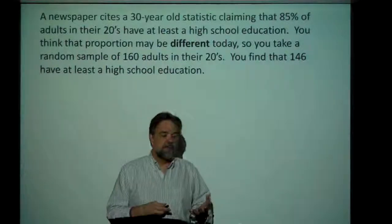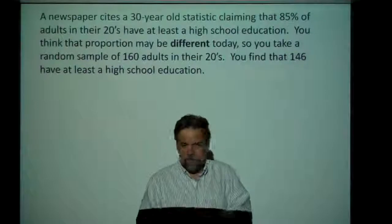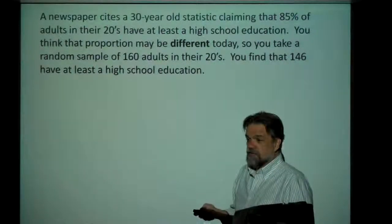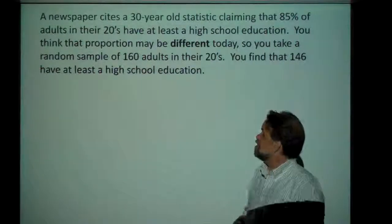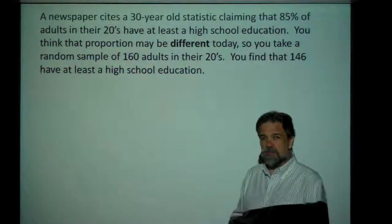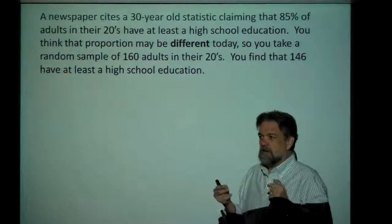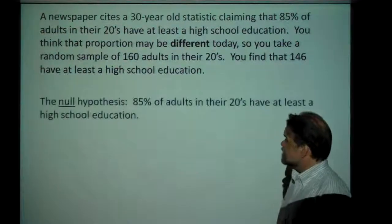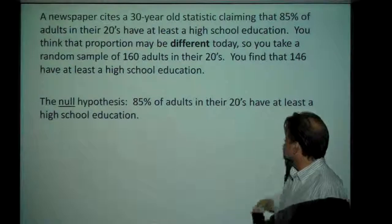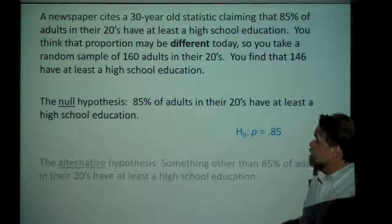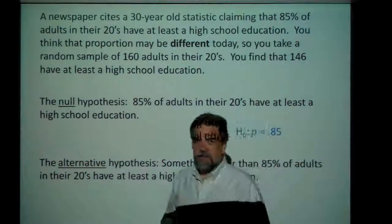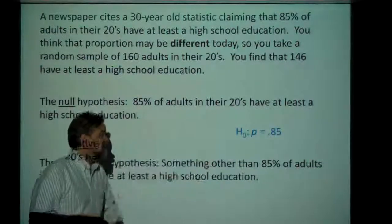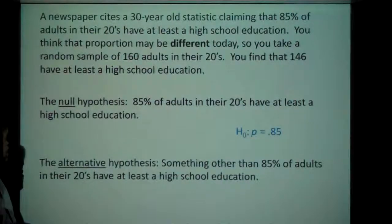Let's go back to our original problem and tweak it somewhat. Same newspaper, same statistic, but this time I don't really have a pre-existing idea of whether the proportion is too low or too high. I'm just focusing on the fact that it's a 30-year-old statistic — we ought to update it. I don't have any pre-existing doubt about whether it's too low or too high, I just think it's probably wrong. My null hypothesis is still: 85% of adults in their 20s have at least a high school education. But this time my alternative hypothesis is not greater than 85%, not less than 85% — simply it's not 85%. Something other than 85% of adults in their 20s have at least a high school education.